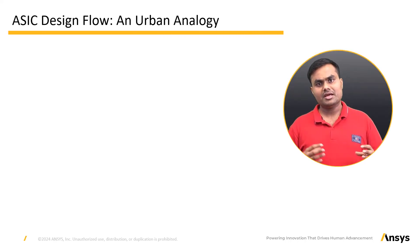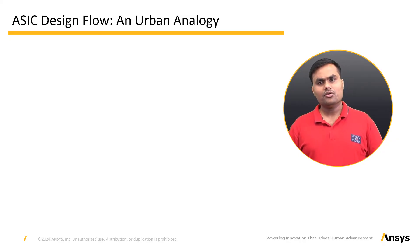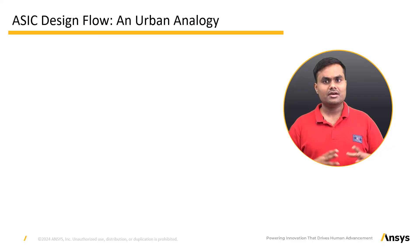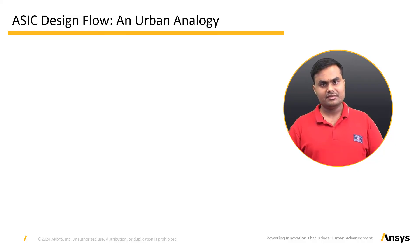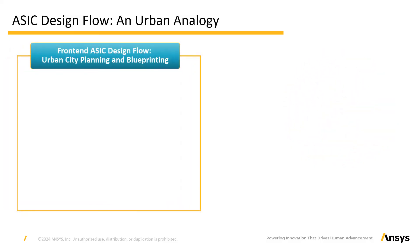ASIC Design Flow: an urban city planning analogy. We'll guide you through the ASIC design flow using an analogy of urban city planning, covering both front-end and back-end flows. Stage 1 — Specifications, similar to the vision of a city: the ASIC design flow begins with a specification phase where we outline the goals and requirements of the ASIC. Stage 2 — Architecture Design, similar to the master plan: we decide on major components and their interconnections, much like city planners decide where roads, parks, and buildings should be placed.